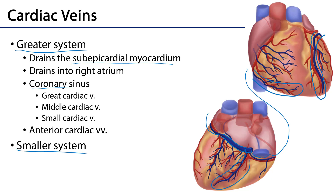So the three major tributaries of the coronary sinus include the great cardiac vein from the anterior interventricular sulcus, the middle cardiac vein from the posterior interventricular sulcus, and the small cardiac vein from the inferior border of the heart. The coronary sinus drains into the right atrium just adjacent to the AV node of the heart.